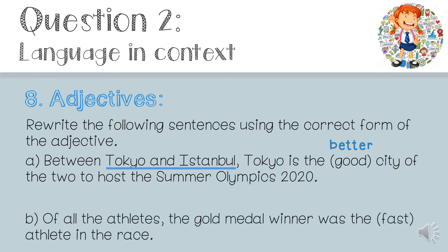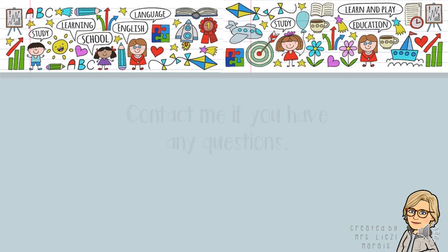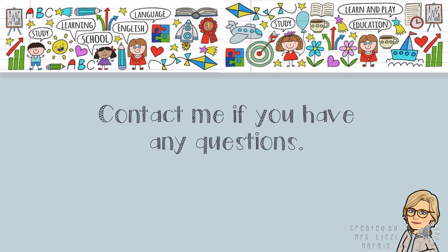Number B: 'Of all the athletes, the gold medal winner was the fast athlete in the race.' We must first determine if the comparison is between two things or more than two. In this case it's all the athletes — more than two — so we use the superlative form of the adjective. The superlative form of 'fast' is 'fastest', so the sentence reads: 'Of all the athletes, the gold medal winner was the fastest athlete in the race.' Grade 7s, I hope you understood the memo. If you still have any questions, please feel free to contact me. Goodbye.